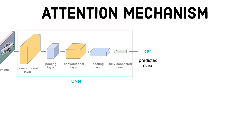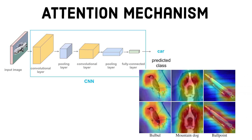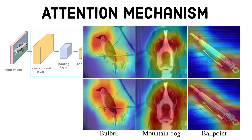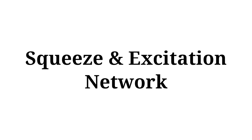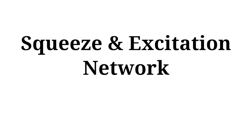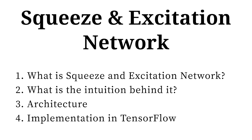Attention is an integral part of the modern day convolutional neural network, as it helps the network to focus more on the important features. It enhances the feature representation by highlighting the important features and suppressing the irrelevant ones. In this video we are going to learn about an attention mechanism called the Squeeze and Excitation network, studying its working and the intuition behind it.